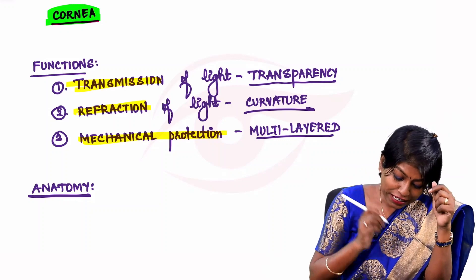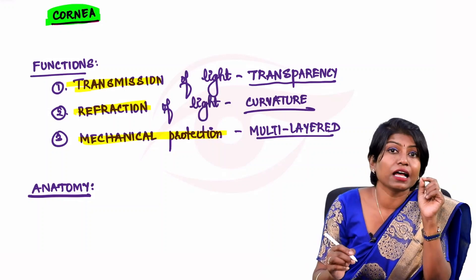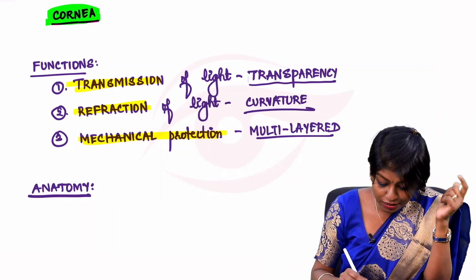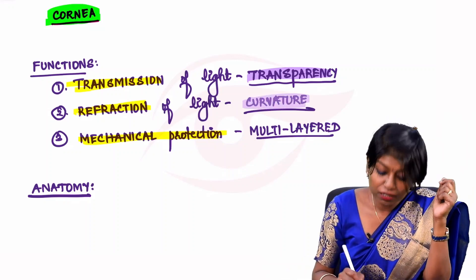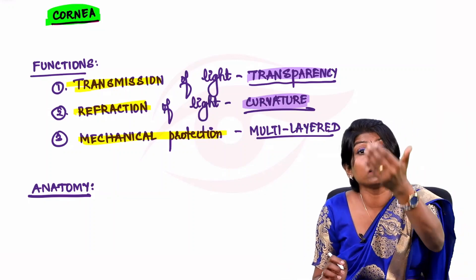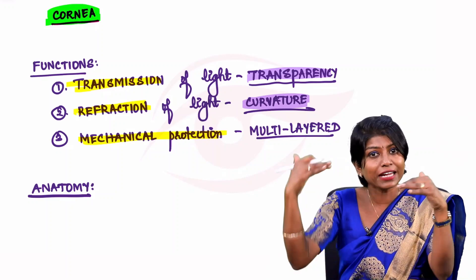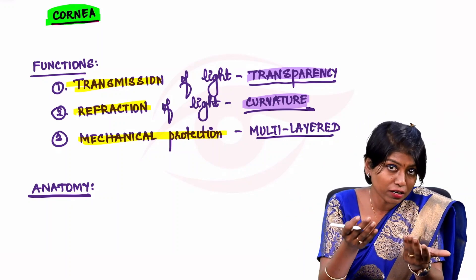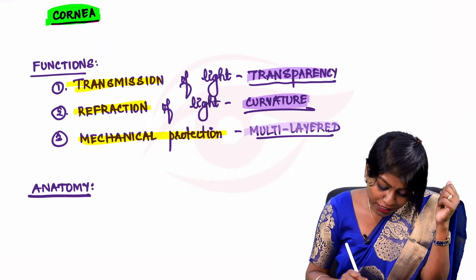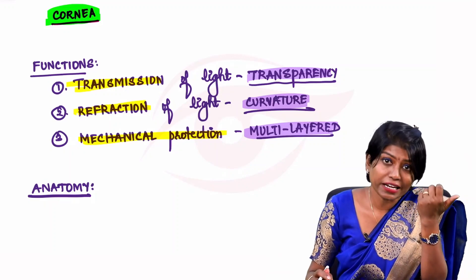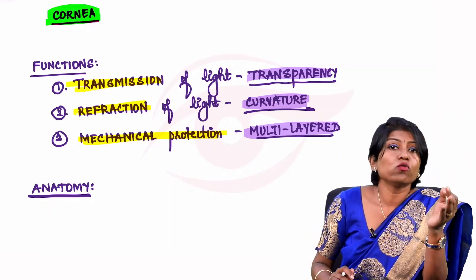For transmission of light, the cornea must be transparent. For refraction, curvature is important — only when the cornea is curved can it bend light, and bending of light is called refraction. Protection is provided by its multiple layers.